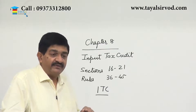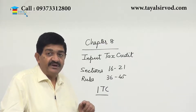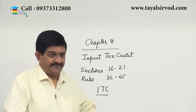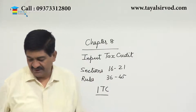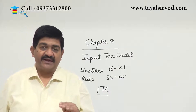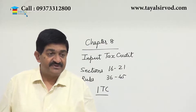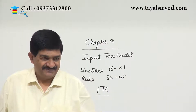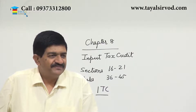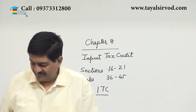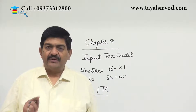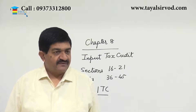So the first thing required is that he should be liable to pay tax. If by chance a person is engaged in an activity which is non-taxable, there is no credit — because there is no tax liability. Now for carrying on any business, three things are mainly required.